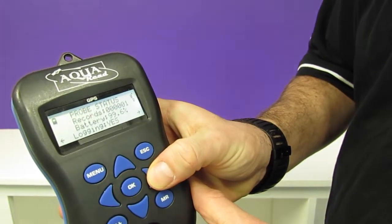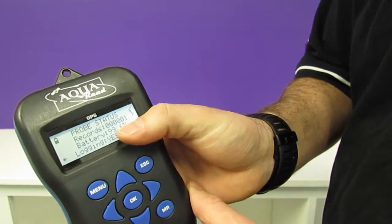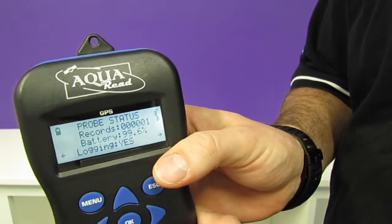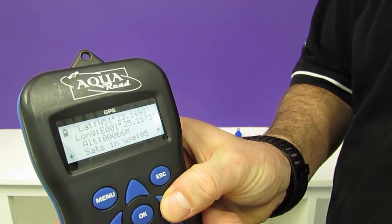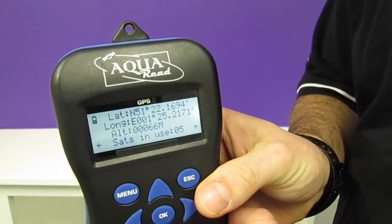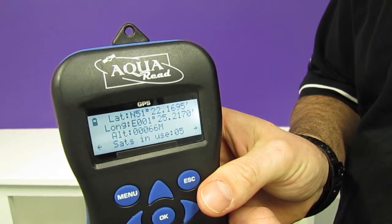We can then scroll from left to right to view the probe status giving us information on the probe's memory and also the battery status, and also the lat long positions that are recorded by the GPS meter.